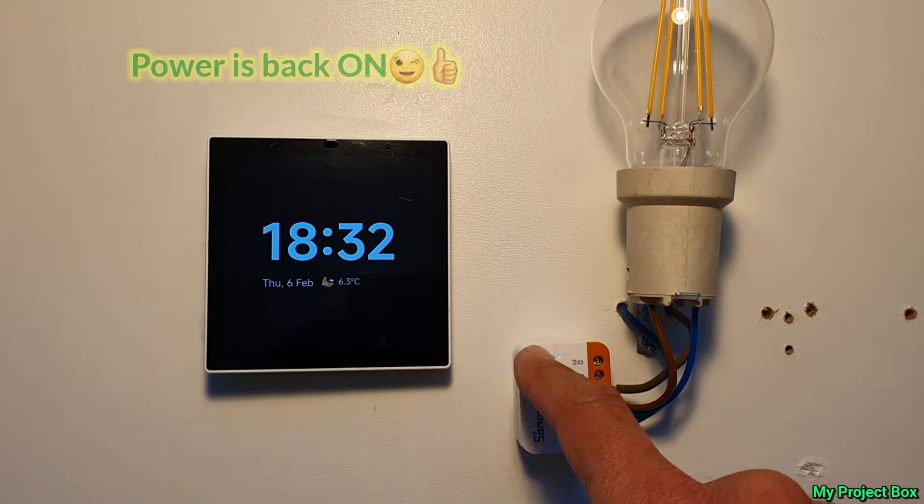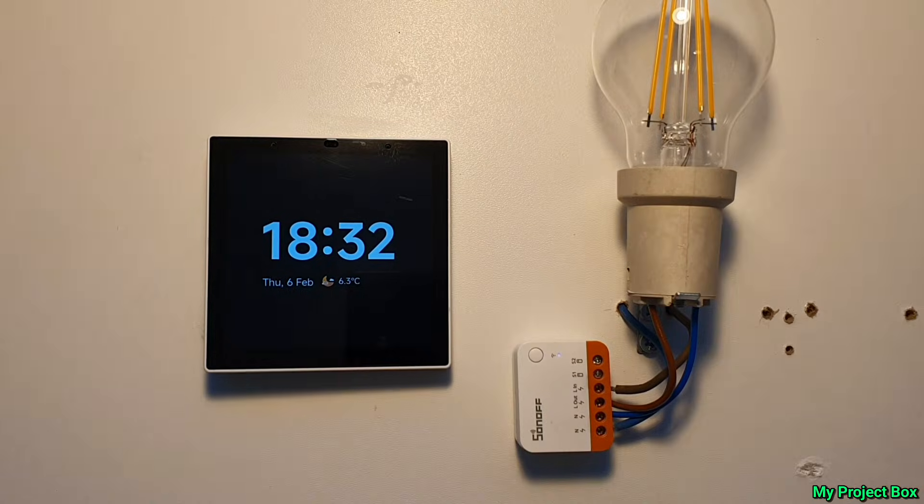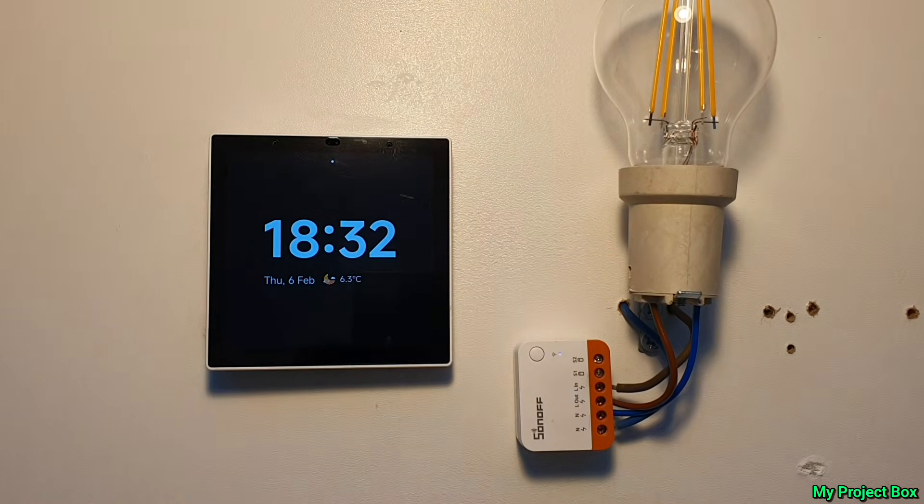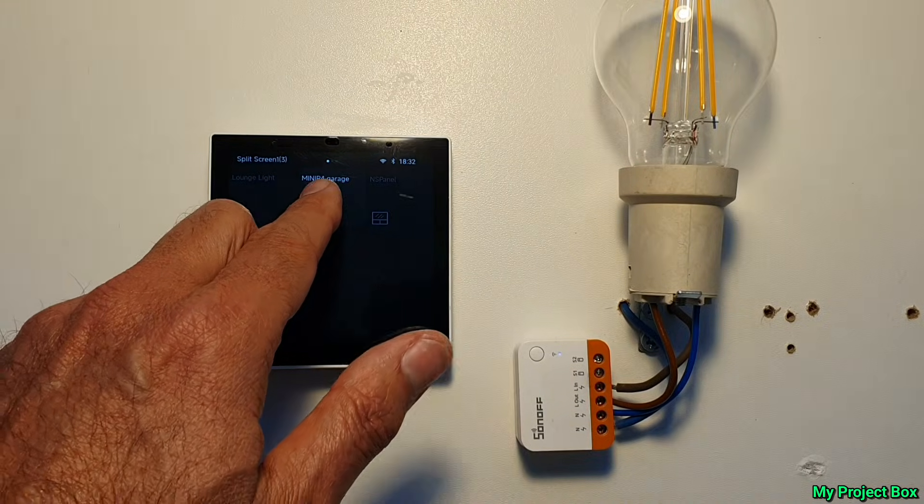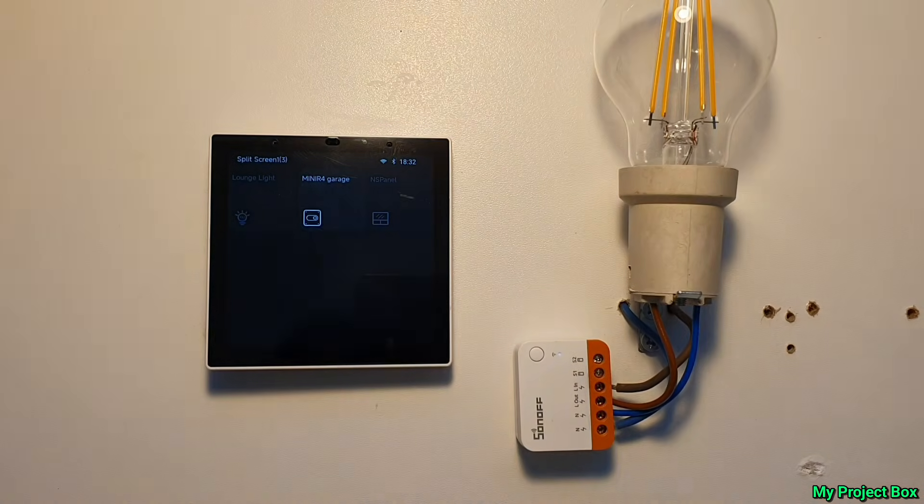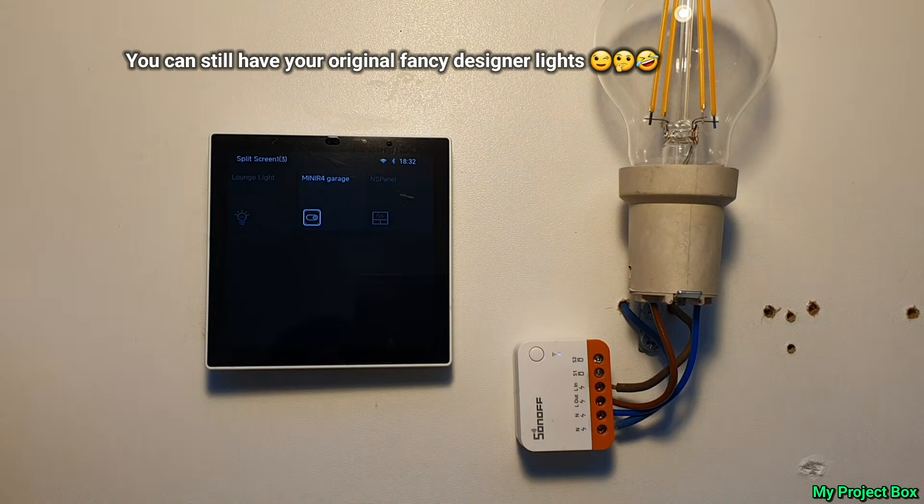With the power back on the NS Panel boots up nicely. We can press the Mini's test button to see if the light comes on. And now the NS Pro can control the Sonoff Mini which can control the light bulb. I guess this proves the NS Panel Pro can act like a normal light switch to turn your existing light fixture on and off. Like magic.